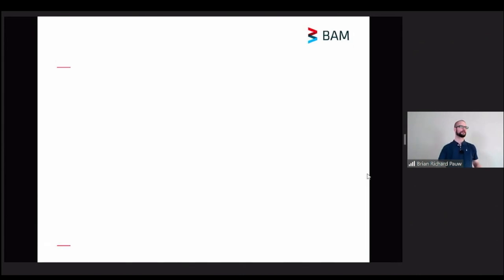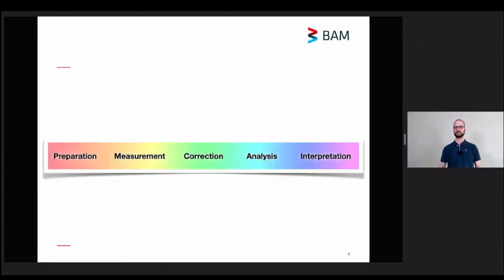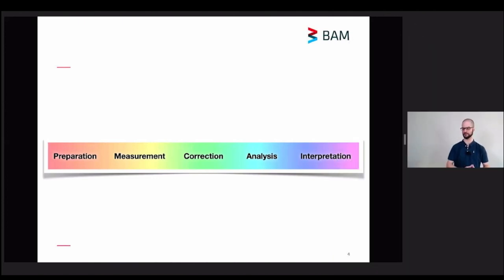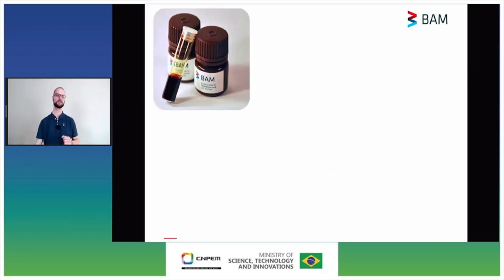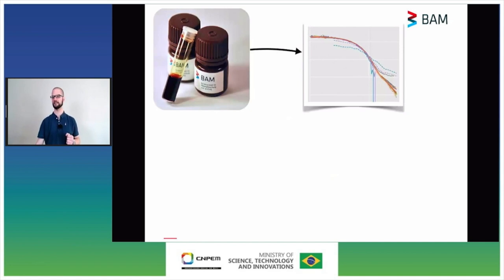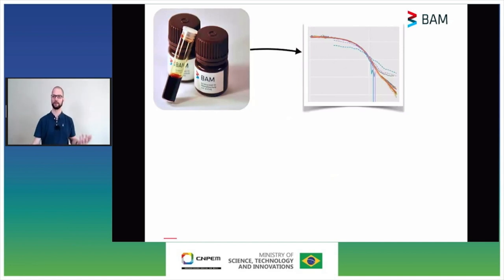At the last small angle scattering conference four years ago in America, I presented the results of another round robin study where we looked at how consistent the data was that we got from the various laboratories. What we did there was to send around pairs of samples and collect the data sets from the various laboratories, which we then analyzed with a range of software.